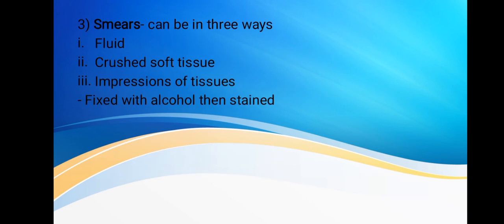The third type of histological specimen is smears. Smears are made from blood, bone marrow, or fluids such as pleural or ascitic fluids. They are immediately fixed with alcohol to preserve cellular structures, then stained.